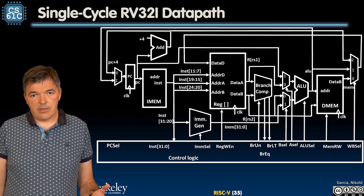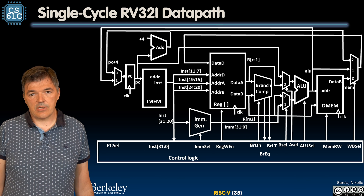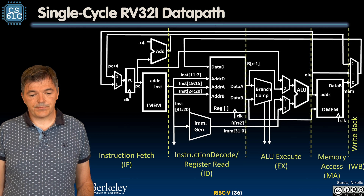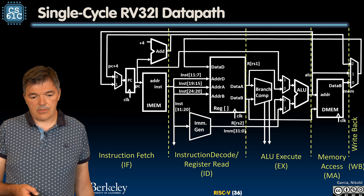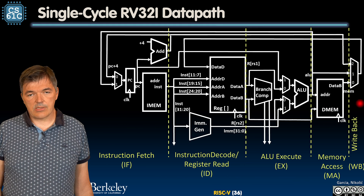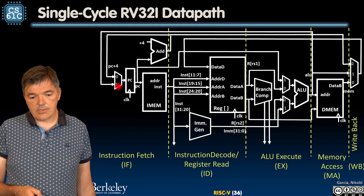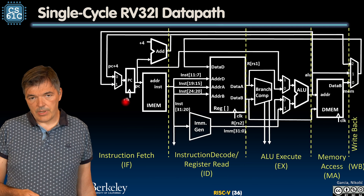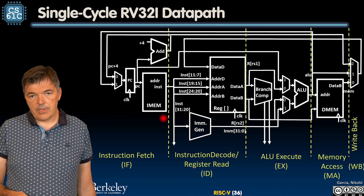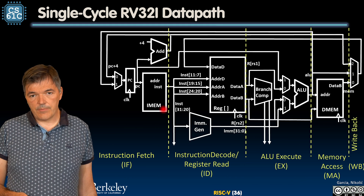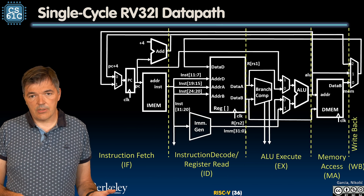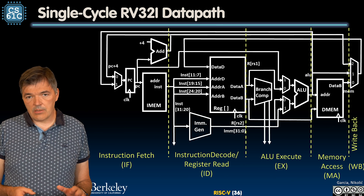We have outlined that there are different stages of execution inside this data path and those are the stages we are going to break down into different pipeline stages. To recap, these stages are instruction fetch, instruction decode with register read, ALU execute stage, memory access, and write back. The instruction fetch starts on the rising edge of a clock by incrementing the program counter and finishes when data is read out of the instruction memory. Memory read and register access are treated as combinational logic operations, meaning they do not rely on clocks.